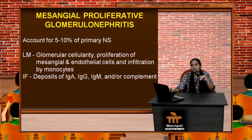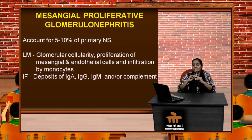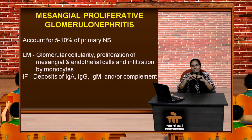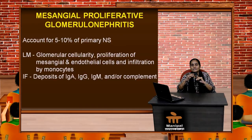Mesangial proliferative glomerulonephritis accounts for around 5 to 10% of all primary nephrotic syndromes. Light microscopy reveals increased glomerular cellularity, proliferation of mesangial and endothelial cells, and infiltration by monocytes — a feature not seen in the other entities. This increase in cellularity hampers the function of the glomerular basement membrane. Immunofluorescence shows deposition of IgA, IgG, IgM, and sometimes complements.